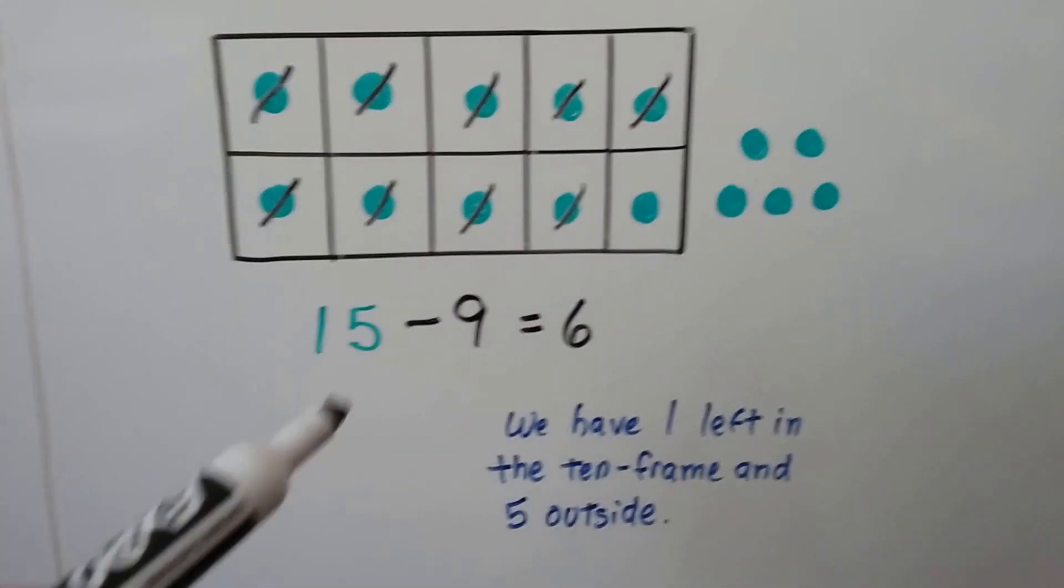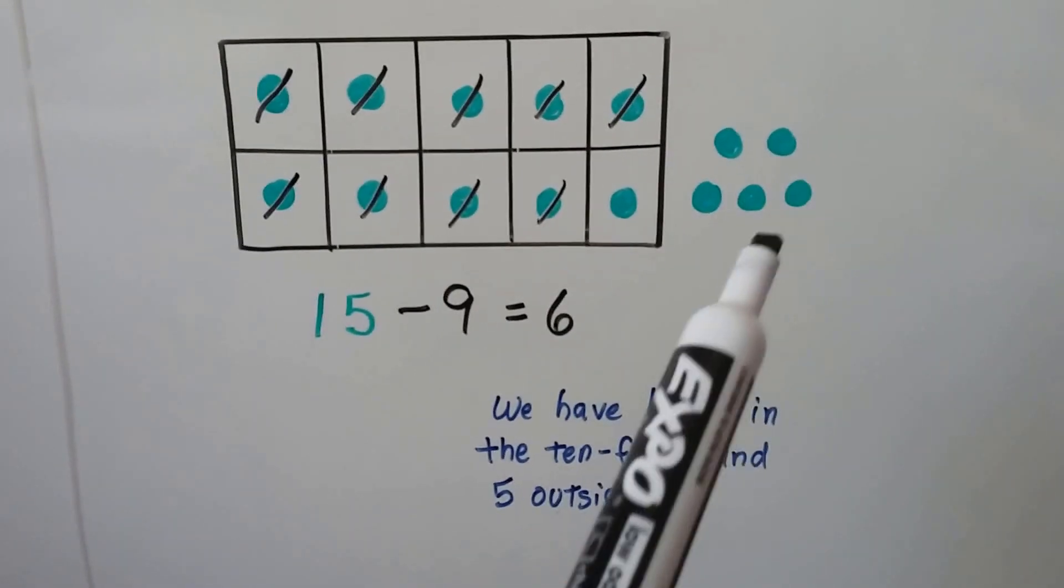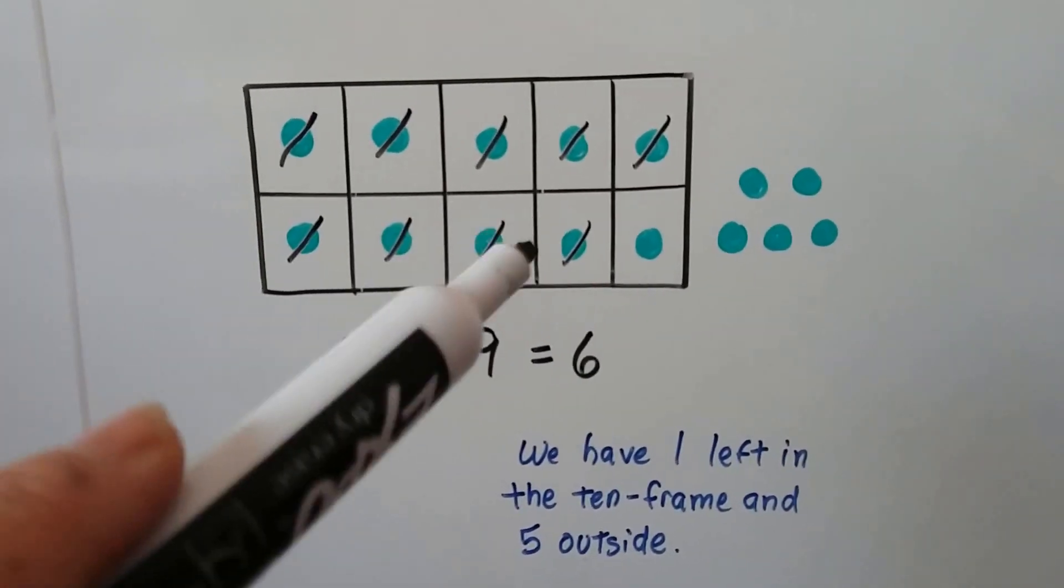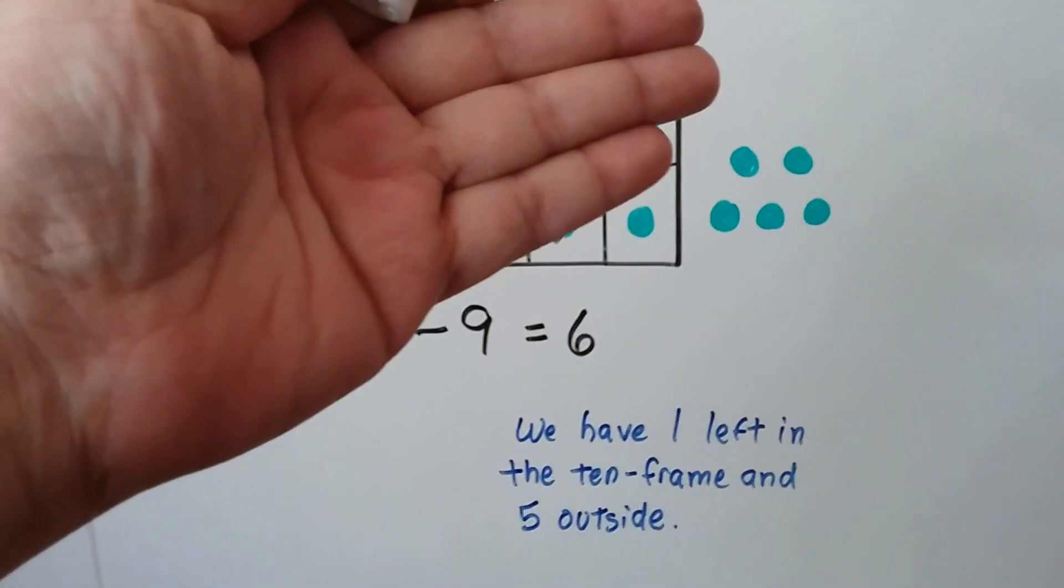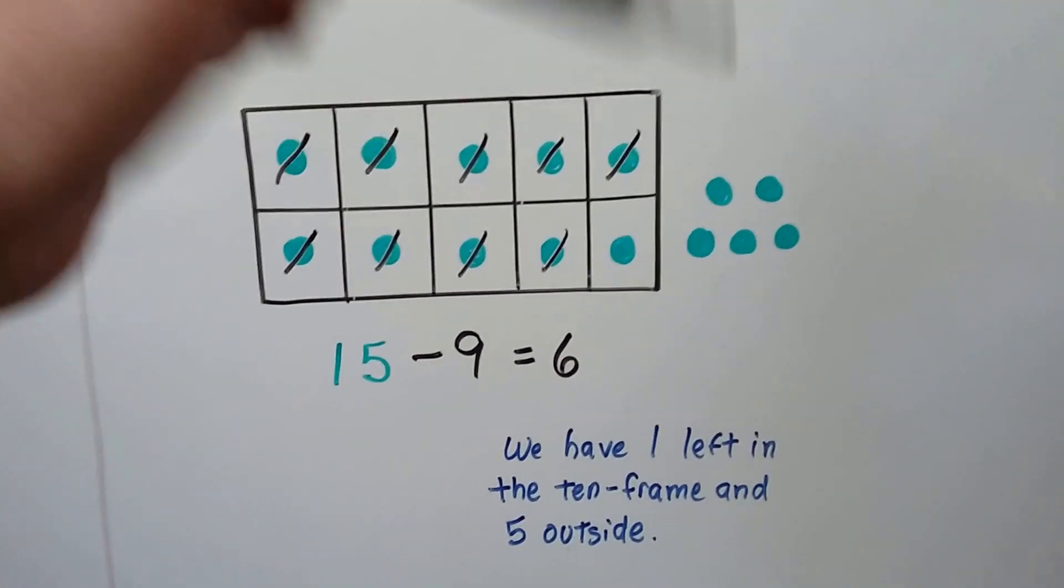Now we have 15 for our minuend. The 10 frame is full and we have 5 on the outside. We remove or cross out 9 of them and we can see that there's 6 left over. 1 here and the 5 on the outside.